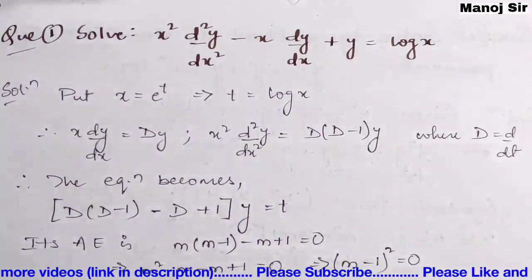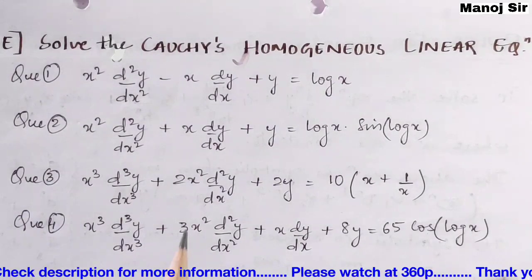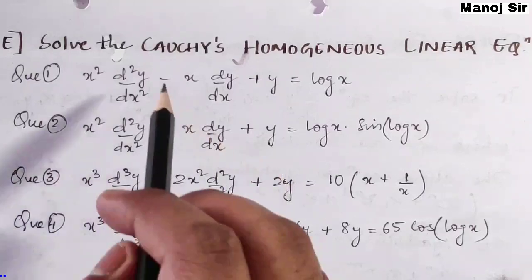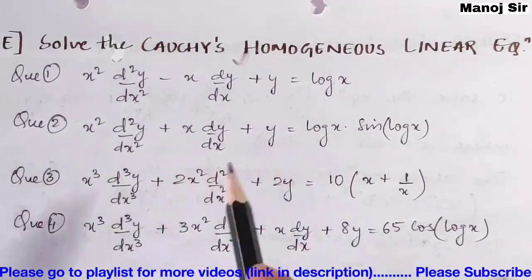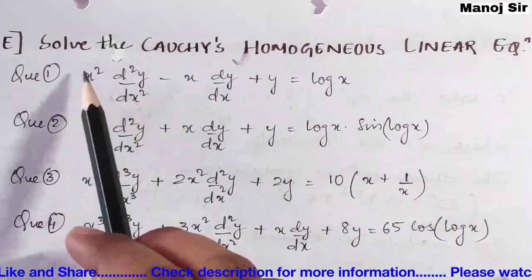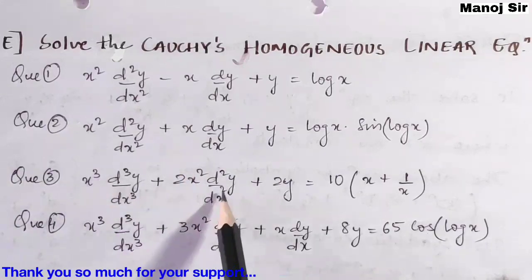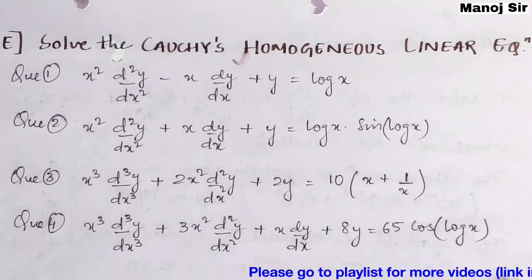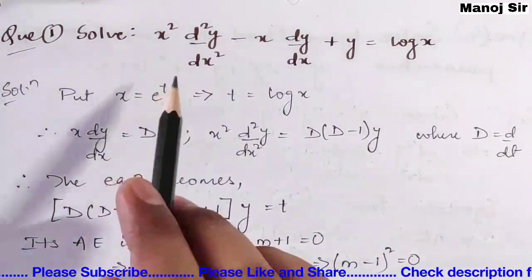Let us start solving this problem. But before solving, I would like to show you what other problems we are going to solve — from video number 21 to 24. After solving this question I am sure you can solve any other problem belonging to this topic. How to identify that an equation belongs to Cauchy's homogeneous linear equation: you can see we have x squared terms, x terms, x cubed terms — this is the pattern to look for.